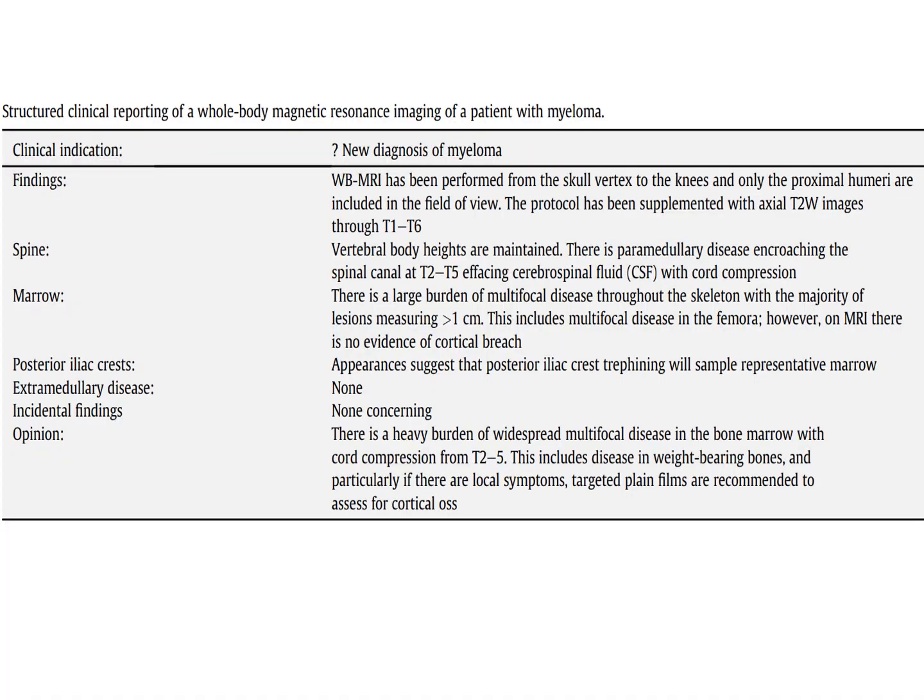This is an example of structured clinical reporting for a whole body MRI in a patient with myeloma. The findings describe the spine, spinal canal, marrow, posterior iliac crests, any extramedullary disease, and incidental findings. A clear, concise opinion is included at the bottom of the report to help assess the patient and monitor treatment response.